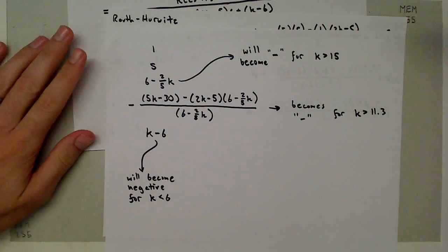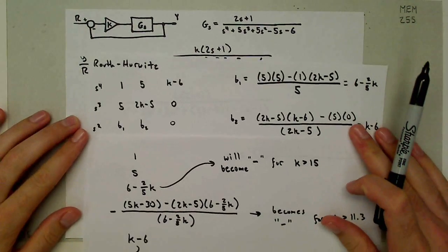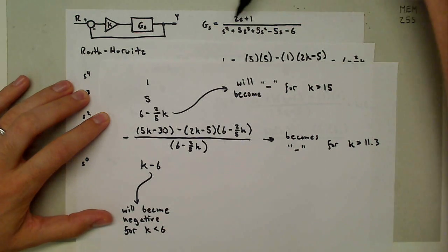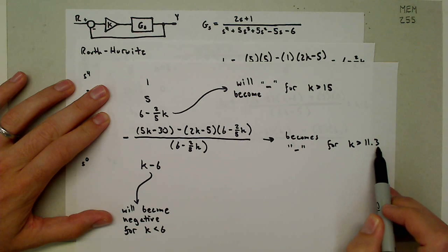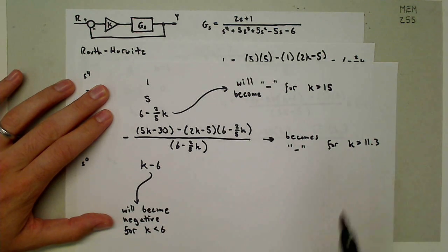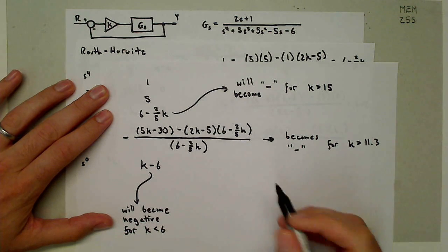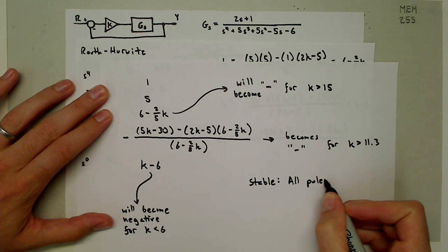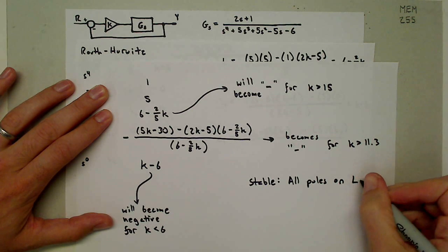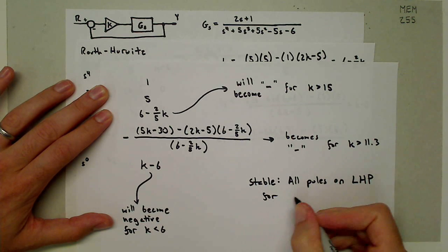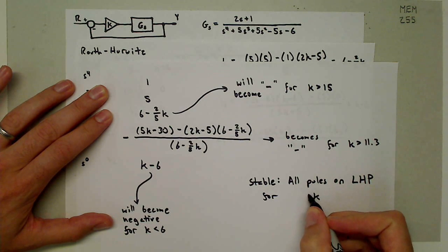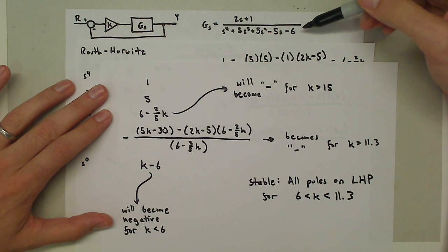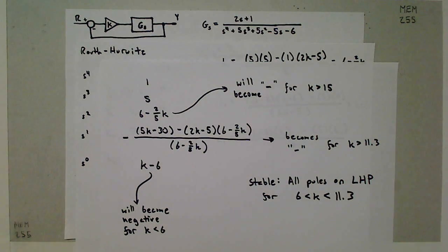What we can see is if we simulate this original system, this G of s with this K, and we give it a range of K between 11.3 and 6, we'll be stable. All our poles are on the left half plane. All poles on the left half plane for K greater than 6 and less than 11.3. We can simulate the system with those values of K to show that that's true.